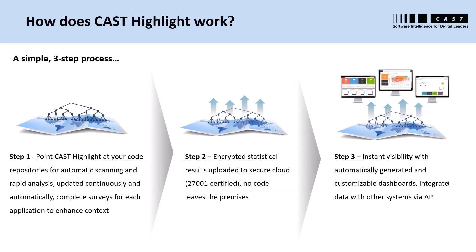The process works in three simple steps. First, you point CAST Highlight analyzers at code repositories for automated code scanning — this happens very fast and can be automated for continuous, ongoing updates. Application owners complete surveys for each application to enhance context. Next, encrypted statistical results are uploaded to a secure cloud that is ISO 27001 certified, and no code ever leaves the premises. Finally, that unlocks instant visibility with automatically generated and customizable dashboards, and data can be integrated with other systems via APIs.